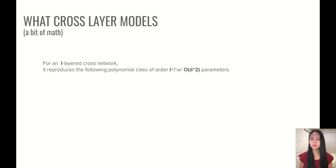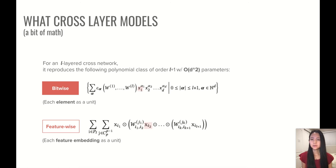So this toy example has given you a flavor of what the cross-layer models. And we could actually be more rigorous on this. Say we stack all cross-layers together. And then the final cross-network would reproduce a polynomial class of order l plus 1 with only order d-square parameters, where d is the input dimension. And there are actually two different perspectives to view it. One is bitwise perspective, which means we consider each element of your input as a unit. And another is feature-wise perspective, which means we consider each feature embedding as a unit. And for both perspectives, we can see that formulas show that it was able to create all the feature interactions up to order l plus 1.